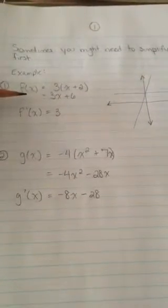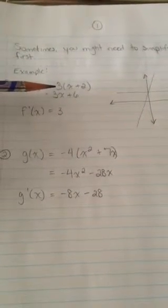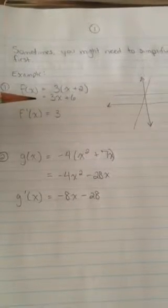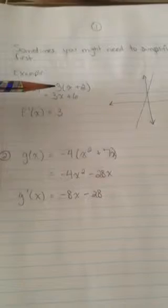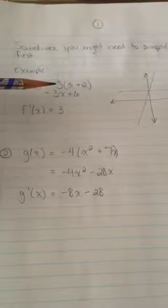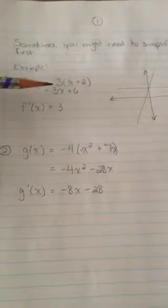So if you are given a function and you have to apply the distributive property, you might want to do that because you can easily take the derivative of 3x plus 6, but it's a little harder because you don't know the rule for taking the derivative of this first example.